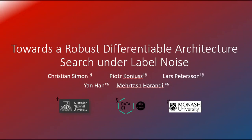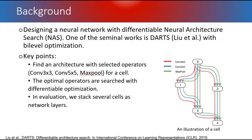I will present towards a robust differentiable architecture search under label noise. As background, we want to design a neural network with differentiable neural architecture search, and one of the seminal works is DARTS with bi-level optimization. For instance, if you have a set of operators — convolutional 3×3, convolutional 5×5, and max pooling — and you want to create a cell with optimal operators, we can use differentiable optimization. For evaluation, we stack several cells as network layers.